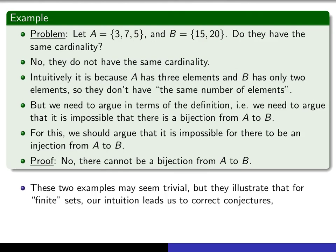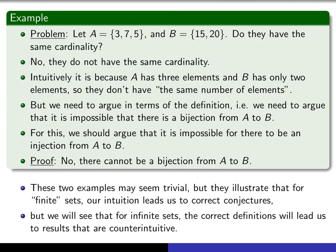So these two examples seem pretty trivial to us. They illustrate that when you're dealing with finite sets, your intuition about cardinality works pretty well. But starting in the next lecture, we'll see a few examples that indicate that when we're dealing with cardinality of infinite sets, the results that turn out to be true are sometimes counterintuitive.